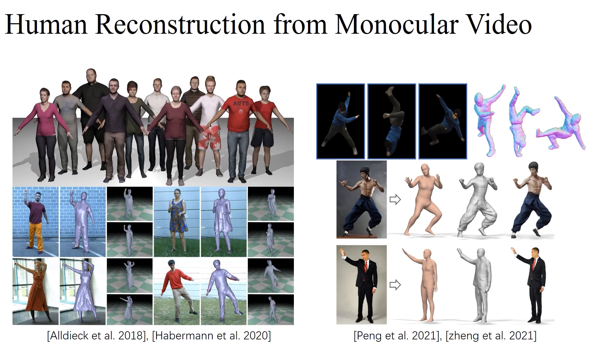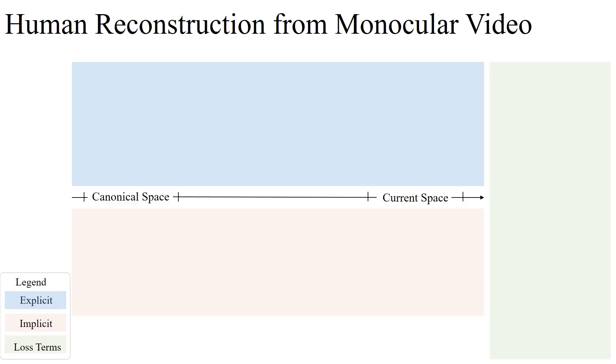In this work, we want to combine the advantages of explicit and implicit representations. The pipeline summarizes the optimization process of Self-Recon. During the optimization, we utilize an MLP F to represent the implicit SDF in the canonical space, and its corresponding explicit mesh is extracted periodically.